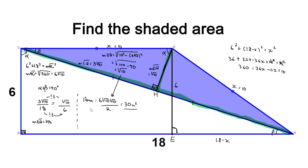Those were two different methods to find the same piece of information — the length of segment DH: the first method using similar triangles, and the second method using the Pythagorean theorem. And with that, I'm Matthew — teach you math. Thank you.